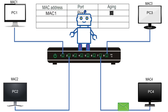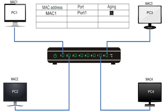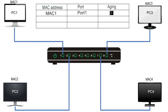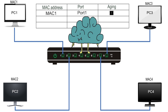A switch uses a relatively simple concept to forward a frame. It finds the destination MAC address of the incoming frame in the CAM table. If the CAM table has an entry for the destination MAC address, it forwards the frame from the port mentioned in the entry. If the CAM table does not have an entry for the destination MAC address, it forwards the frame from all ports except the port on which it arrived. The process of forwarding a frame from all ports except the arriving port is called frame flooding.